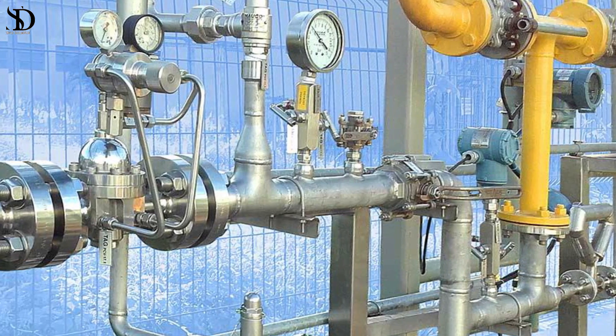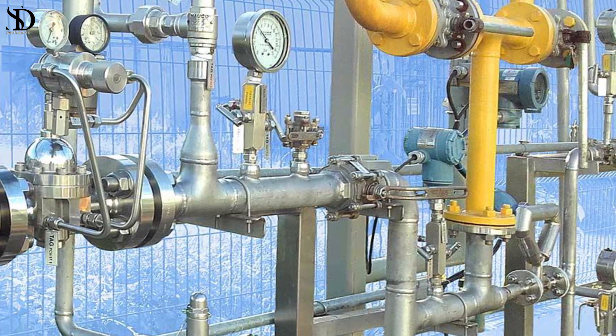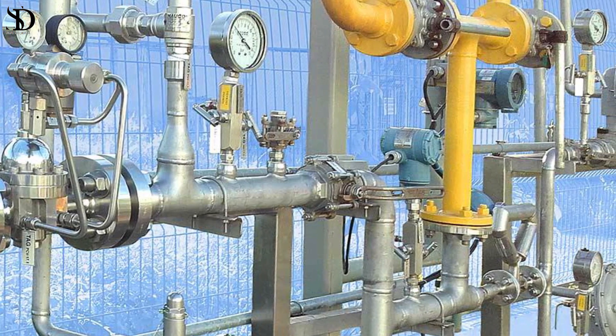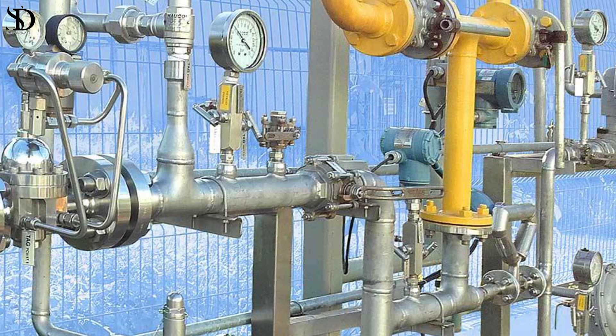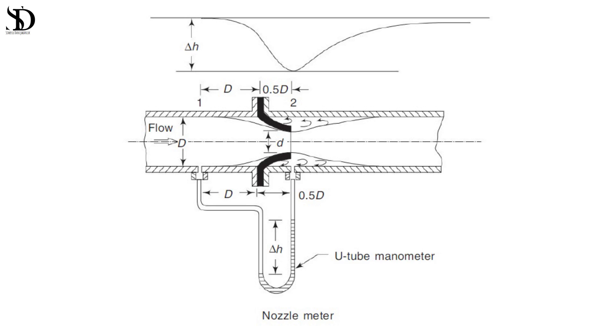Flow nozzles principle: flow nozzles operate similarly to venturi tubes but feature a single tapered inlet followed by a cylindrical throat section. They generate a pressure drop proportional to the flow rate, allowing for accurate flow measurement.